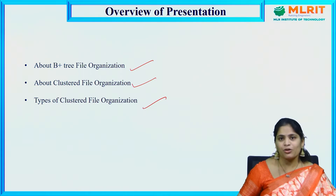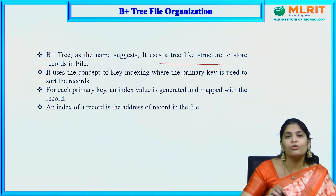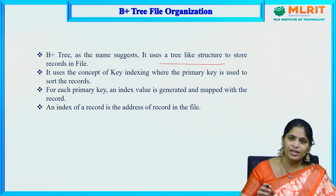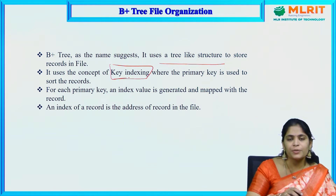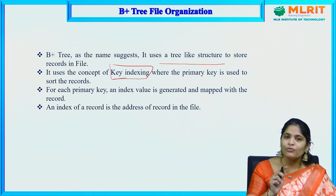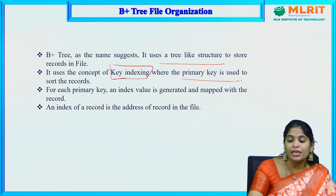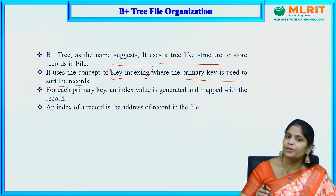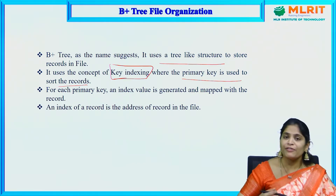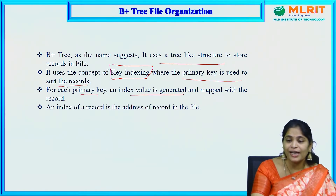Let us discuss about B plus tree organization first. As the name suggests, B plus tree uses a tree-like structure to store the records in a file. It uses the concept of key indexing — based upon the key value, we compare and store the particular record in a particular node. The primary key is used to sort the records, so we can fetch them in a very easy and efficient way. For each primary key, an index value is generated and mapped with the record.